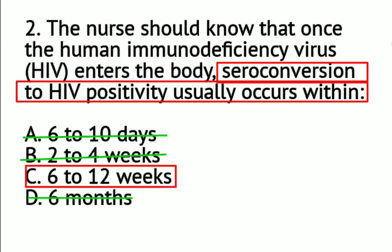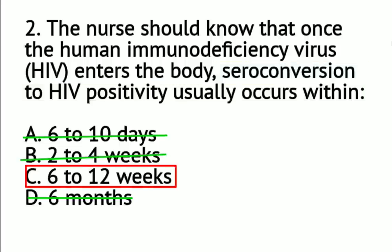The 6 to 10 days option is too short a time period for seroconversion to HIV positivity. The 2 to 4 weeks option is also too short. And 6 months is too long for your seroconversion positivity. So the correct answer is letter C.